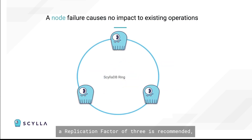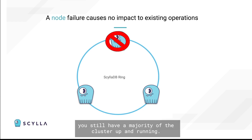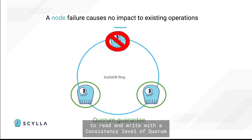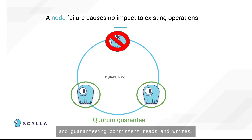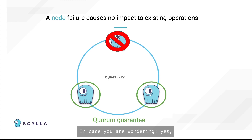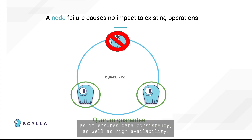To understand why a replication factor of 3 is recommended, let's go through a simple exercise. As a node in the cluster fails, you will still have a majority of the cluster up and running, thus still allowing the application to read and write with a consistent level, and guaranteeing consistent reads and writes. A ScyllaDB cluster of 3 nodes is the minimum we recommend, as it ensures data consistency as well as high availability.